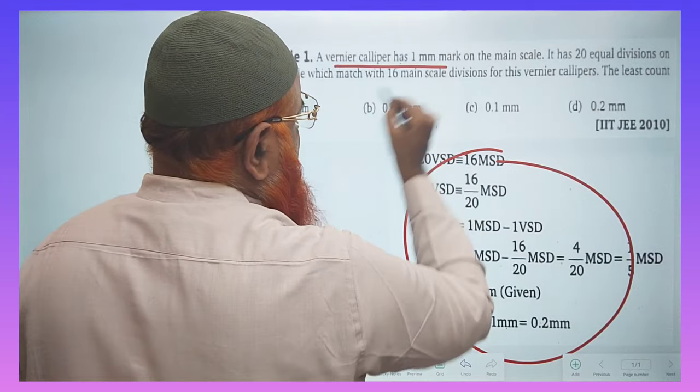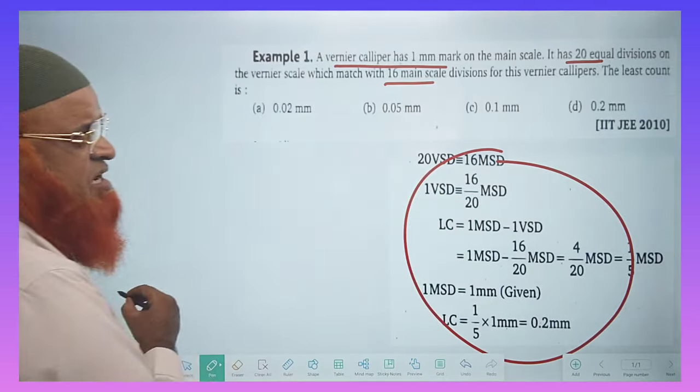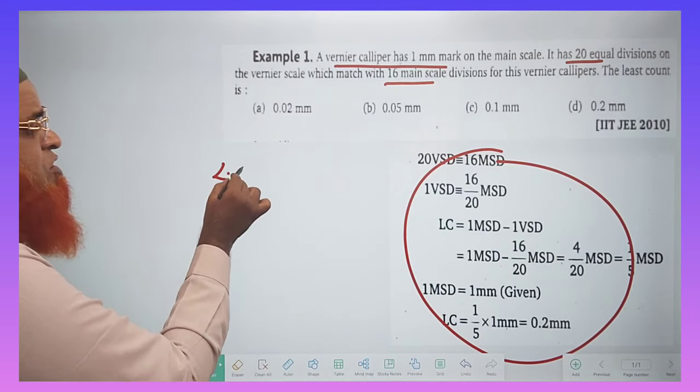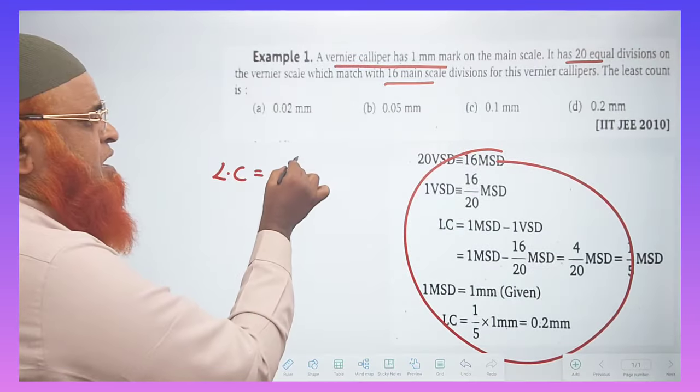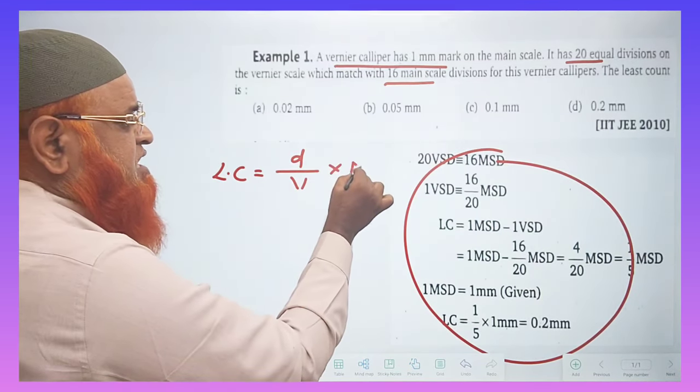Vernier calipers having 1 mm marking, 20 vernier scale divisions are there, 16 main scale divisions are there. So the simple shortcut formula to find out the least count is difference divided by vernier scale divisions into main scale reading.